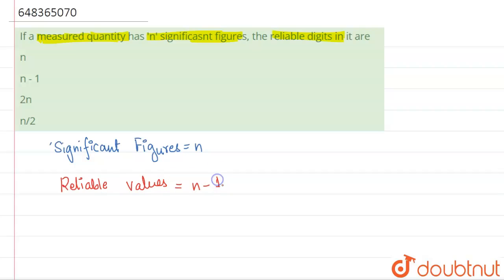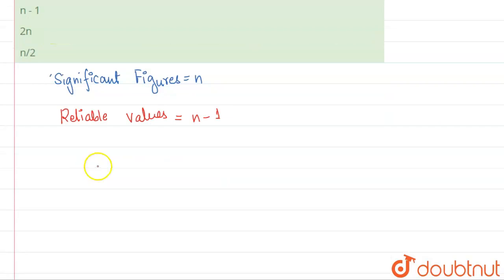basically equal to n minus one. And why is it so? Let me explain with an example. Let's suppose the value was 1.25694. So basically, the last digit is not reliable. That means